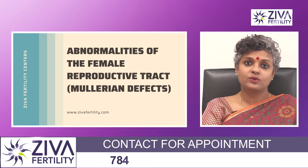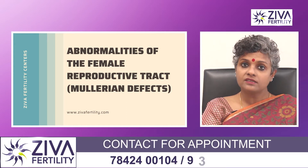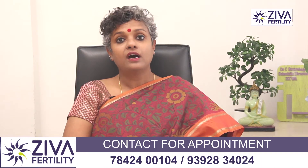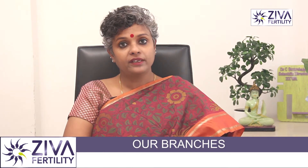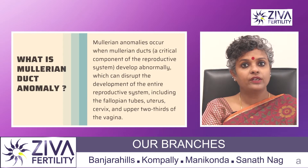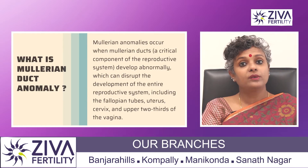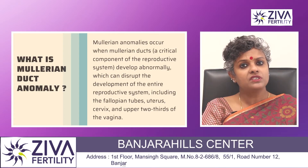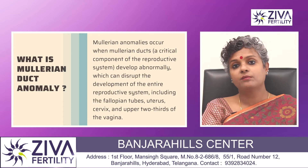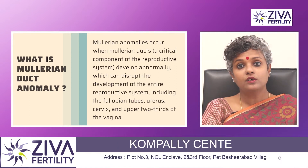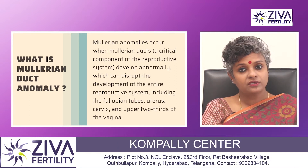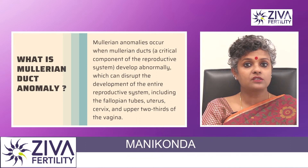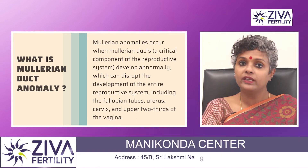Let's try to decode this question. These defects of the female reproductive tract are called Mullerian defects. Like any other organ of the body, a woman's reproductive organs take shape when she is still a fetus inside the mother's uterus. These organs include the uterus and the fallopian tubes, which develop from two ducts known as Mullerian ducts.